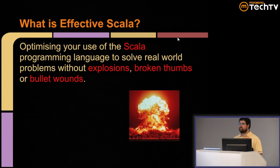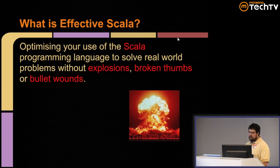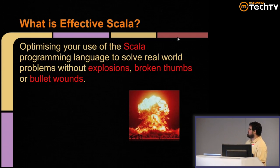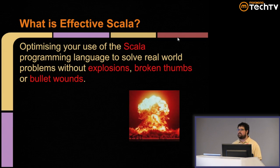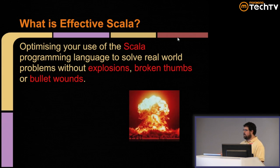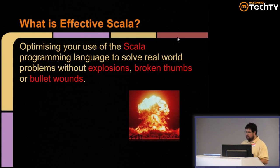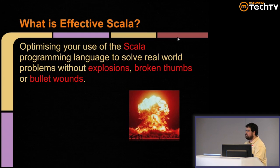Let's talk about what effective Scala is. We want to optimize our use of Scala to solve real-world problems without explosions, broken thumbs, and bullet wounds. In any language you can write terrible code. Scala does not prevent you from writing terrible code — it's designed to help you write really elegant code. Effective Scala is trying to write nice, elegant code, avoiding pitfalls, knowing where they are, and succeeding in your daily work.